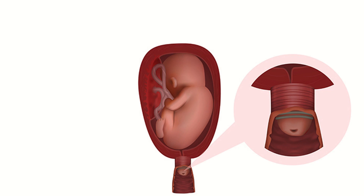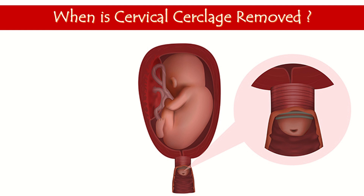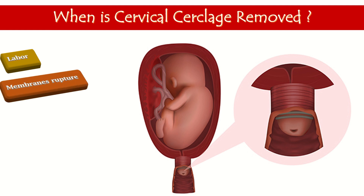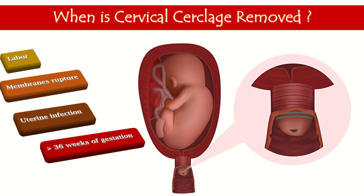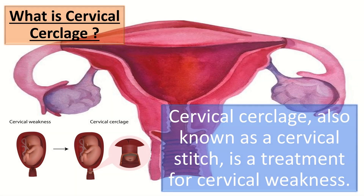Cut the leftover thread. Cervical cerclage is removed when the patient begins to labor — contractions or vaginal bleeding starts — or when membranes rupture, when there is evidence of uterine infection, or if the patient reaches more than 36 weeks of gestation.